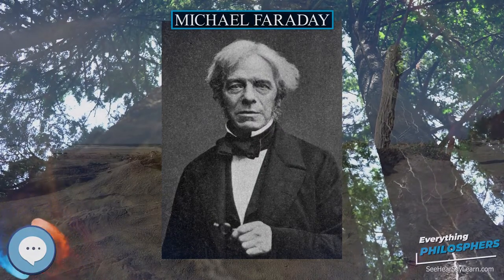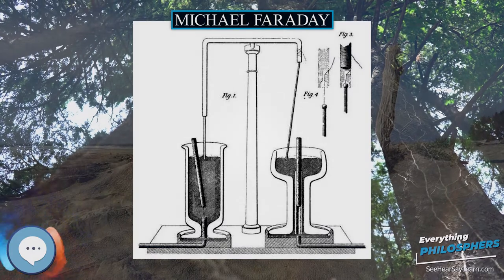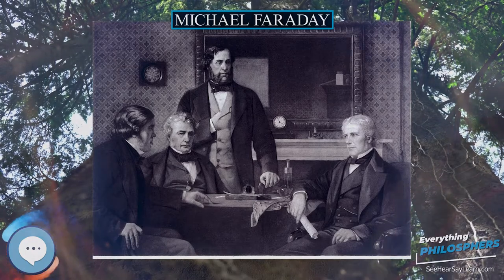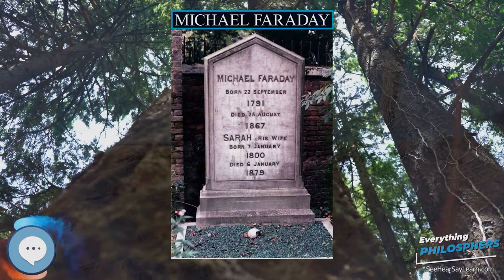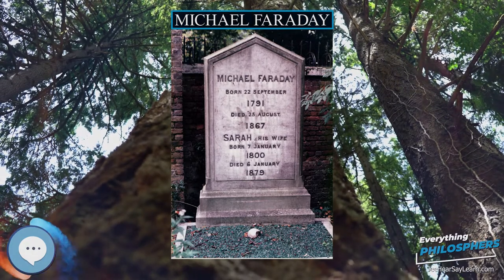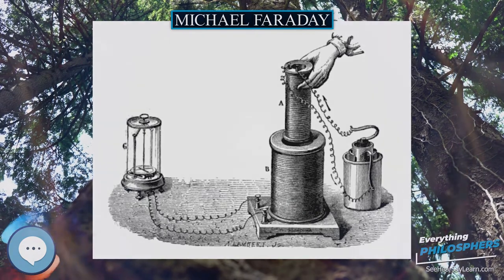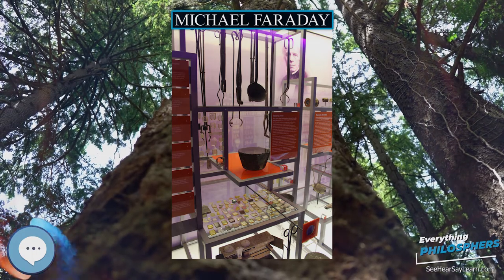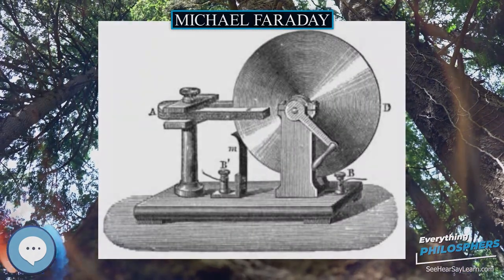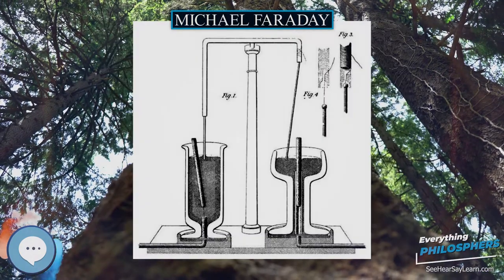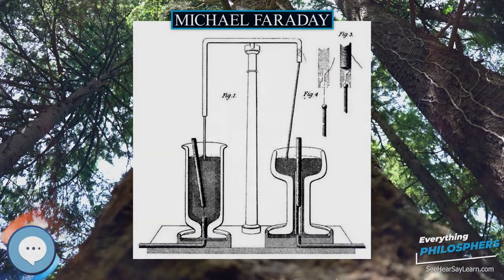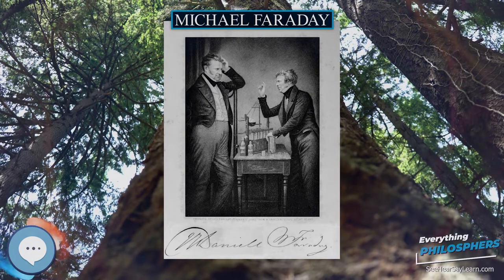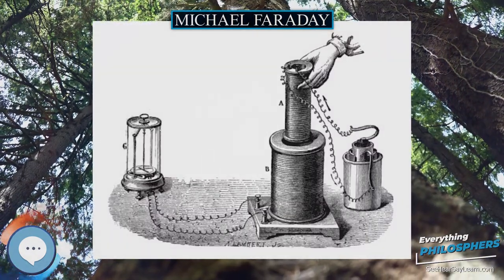In June 1832, the University of Oxford granted Faraday a Doctor of Civil Law degree. During his lifetime he was offered a knighthood in recognition for his services to science, which he turned down on religious grounds, believing that it was against the word of the Bible to accumulate riches and pursue worldly reward, and stating that he preferred to remain plain Mr. Faraday to the end. Elected a member of the Royal Society in 1824, he twice refused to become president. He became the first Fullerian Professor of Chemistry at the Royal Institution in 1833. In 1832, Faraday was elected a foreign honorary member of the American Academy of Arts and Sciences.